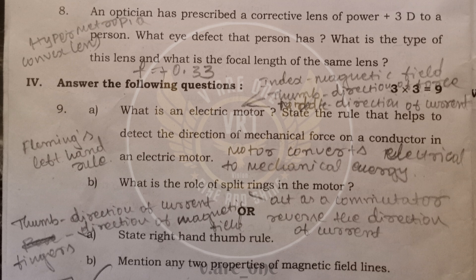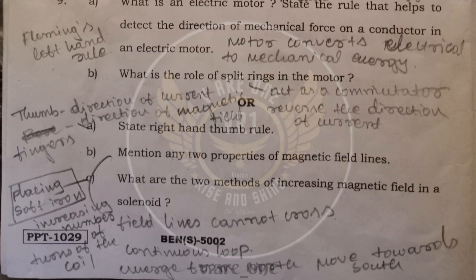In fourth main, what is an electric motor and detect the direction of mechanical force of the conductor? State the rule that helps to detect the direction of mechanical force of the conductor in electric motor. And what is the role of the split rings in the motor? Electric motor is a device which converts the electrical energy to mechanical energy.